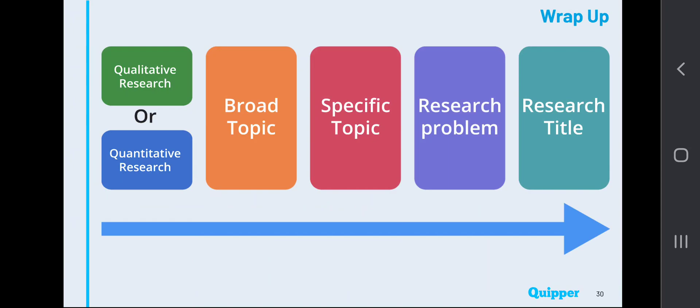Now, whether be it qualitative or quantitative research, we always begin with this process. It starts with a broad topic, narrowed down to a specific topic. And then from there, we identify the research problem in order for us to craft a working research title.